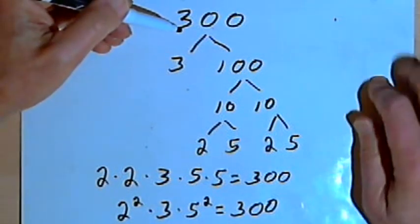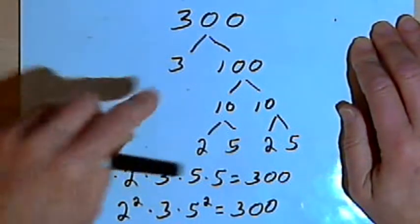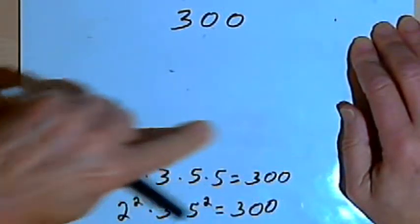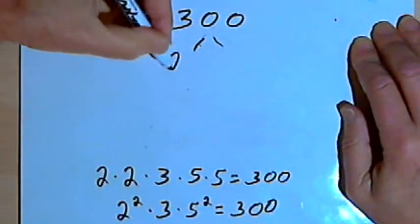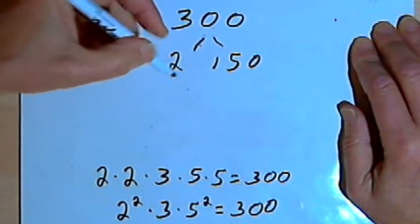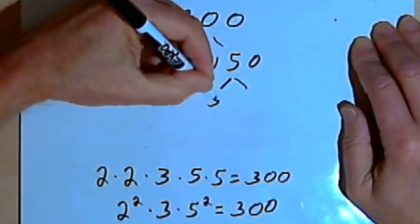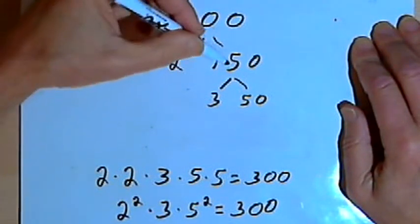Now different people might get to this factorization different ways. Somebody might look at the 300 and say 300 is even. So I'll divide it into 2 and 150. Then 2 would be prime. They might want to divide the 150 into 3 and 50.